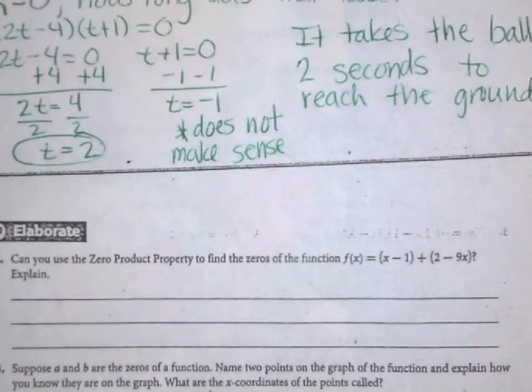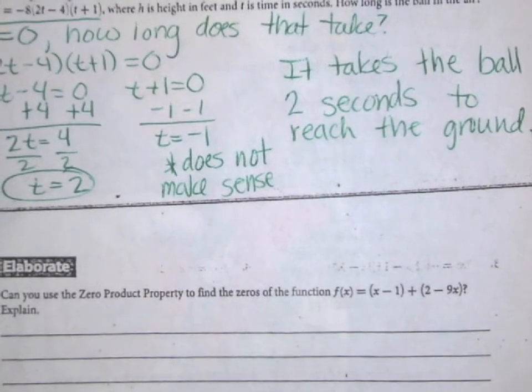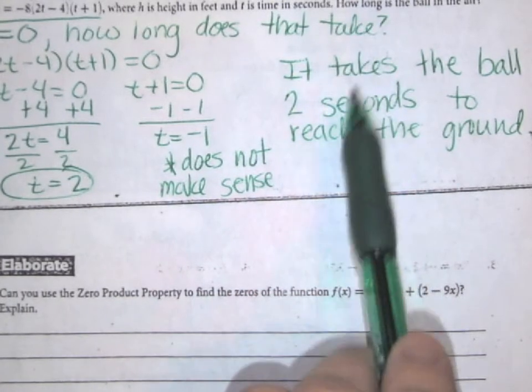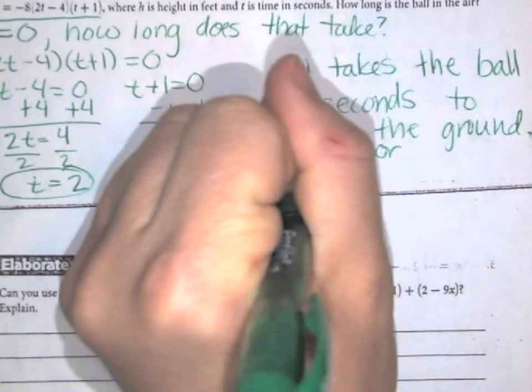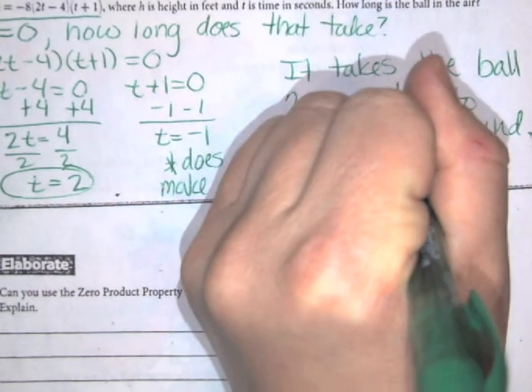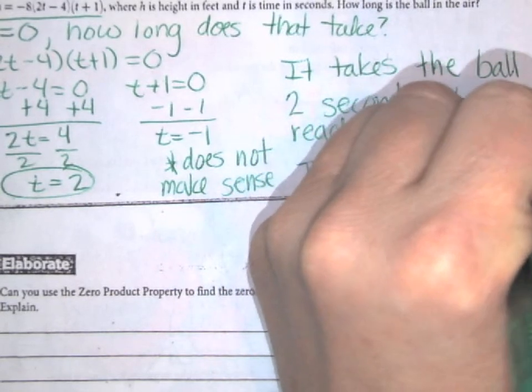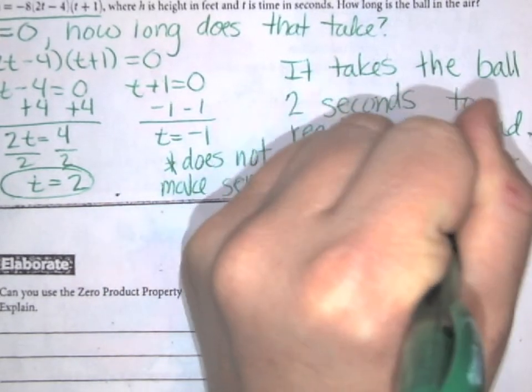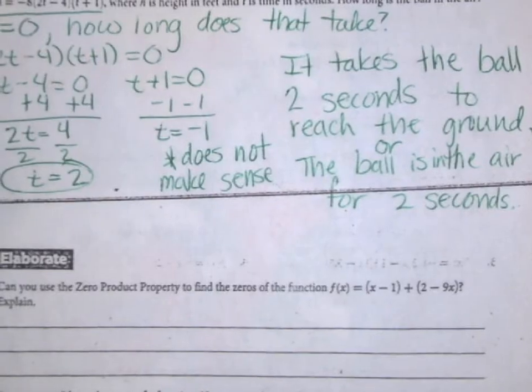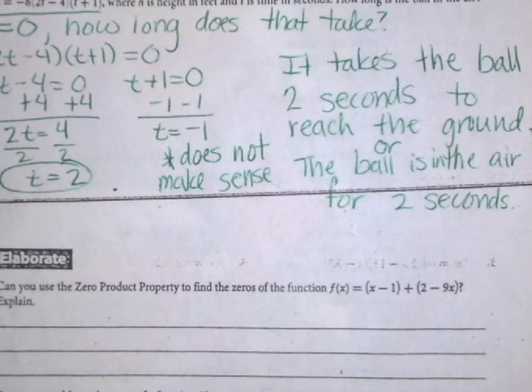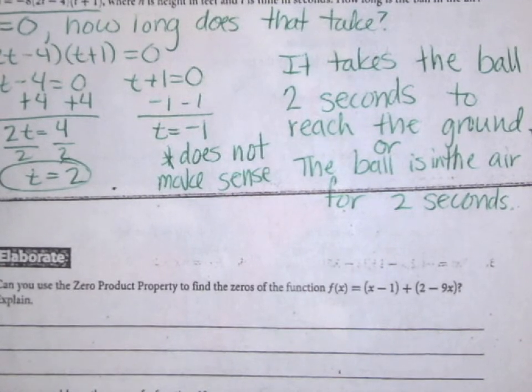I hope that this helped. Remember, when you have a word problem, always write your final answer in a sentence, referring back to the terms given in the word problem. Your answer should not just be t = 2. What does that mean for this problem? You could also say the ball is in the air for two seconds. If you want to use the words from the question, that's sometimes helpful. I hope you enjoyed the video as always. Have a wonderful day.